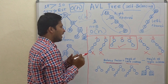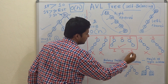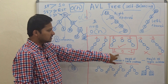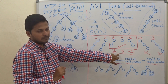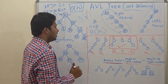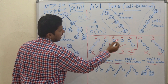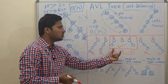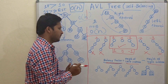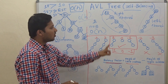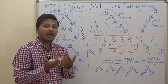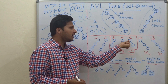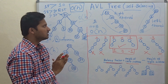A tree is considered balanced when the balance factor for every node is 1, 0, or -1. Such a tree is called an AVL tree. If any node has a balance factor greater than 1 or less than -1, that tree is not a balanced binary tree and is not an AVL tree.